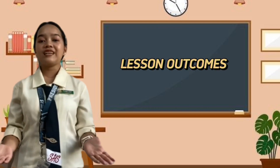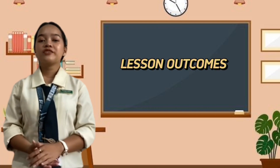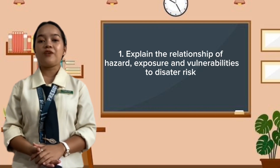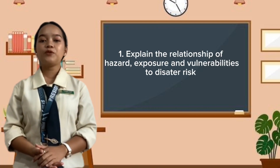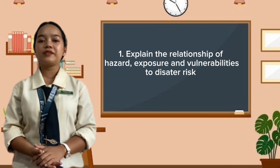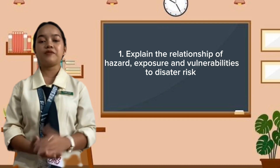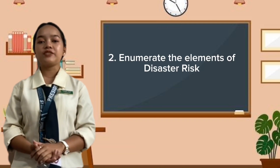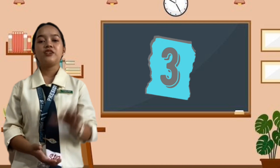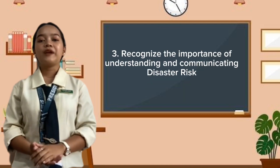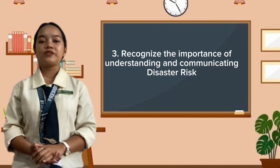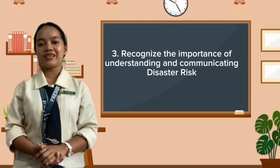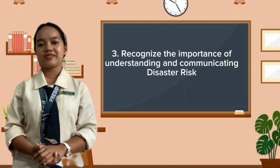At the end of this lesson, you are expected to: first, explain the relationship of hazard, exposure, and vulnerabilities to disaster risk; second, enumerate the elements of disaster risk; and third, recognize the importance of understanding and communicating disaster risk.